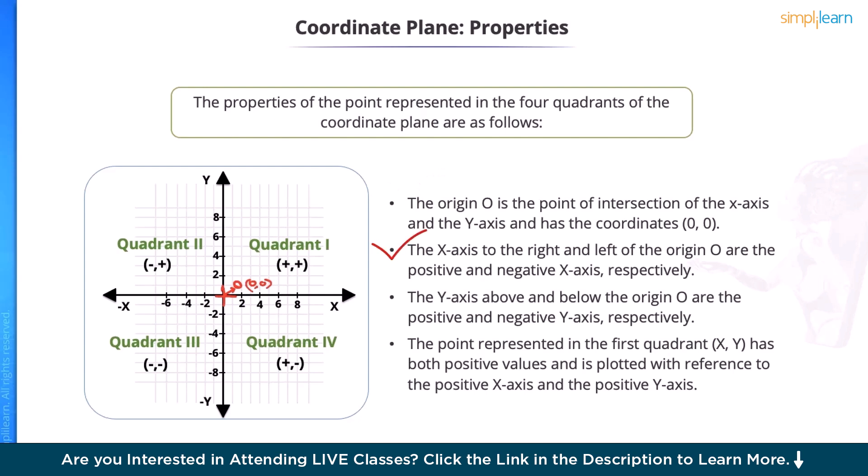The x-axis to the right and to the left are positive x-axis and negative x-axis, respectively, while y-axis above and below the origin O are the positive and negative y-axis, respectively.